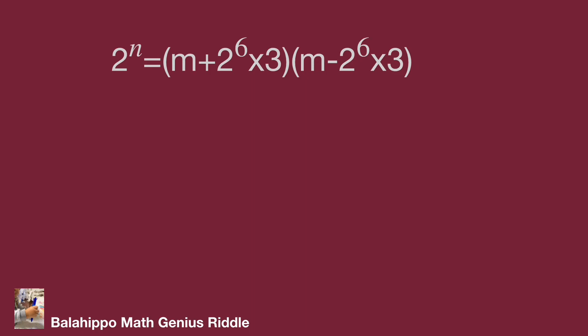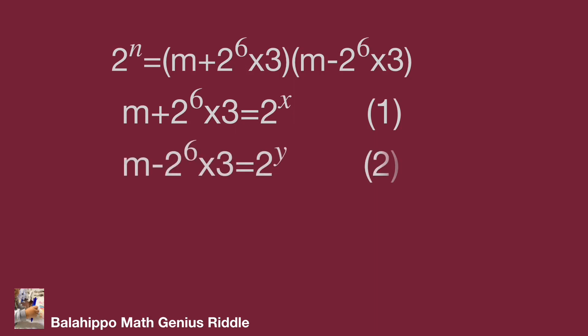For easy calculations, we define m plus 2 to the power of 6 times 3 equal to 2 to the power of x as equation 1, and m minus 2 to the power of 6 times 3 equal to 2 to the power of y as equation 2. Substituting these into the product, we get 2 to the power of n equal to 2 to the power of x times 2 to the power of y, equal to 2 to the power of x plus y.